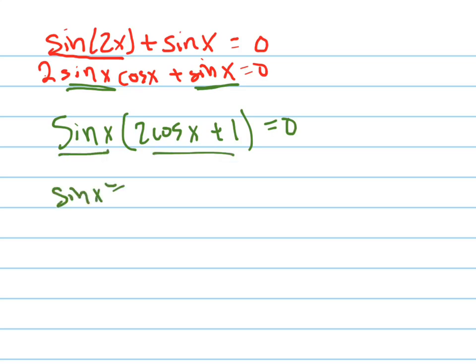So sine of x equals 0, or 2 cosine x plus 1 equals 0, which means cosine x equals negative 1 half.